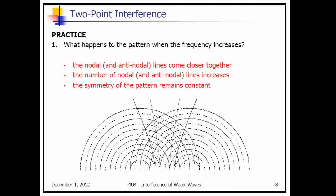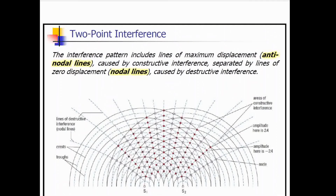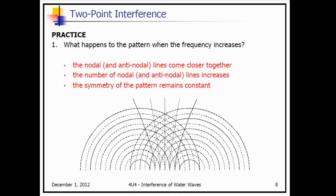What happens to the pattern when the frequency increases? If we increase the frequency of those waves, those nodal and anti-nodal lines end up kind of coming together, and the number of nodal and anti-nodal lines increases. But the symmetry of the pattern is the same. Looking back at the image, if we increase the frequency of the wave sources S1 and S2, we end up seeing the lines converging together.